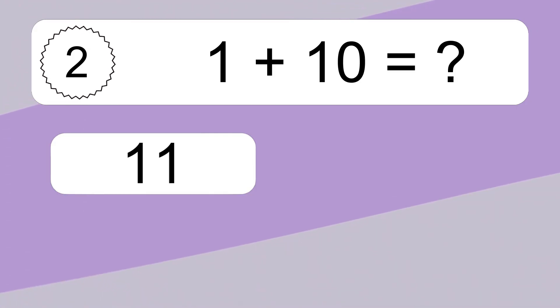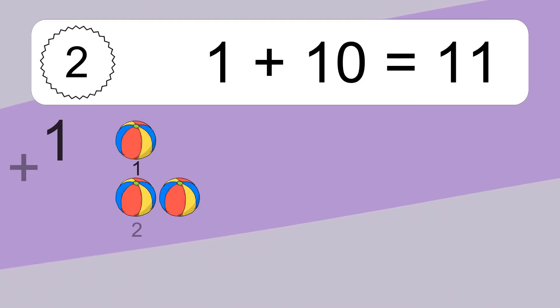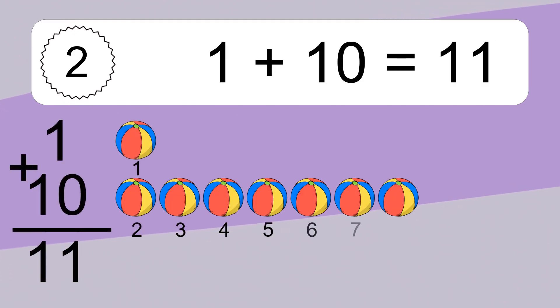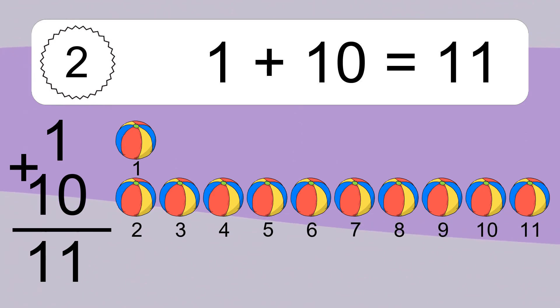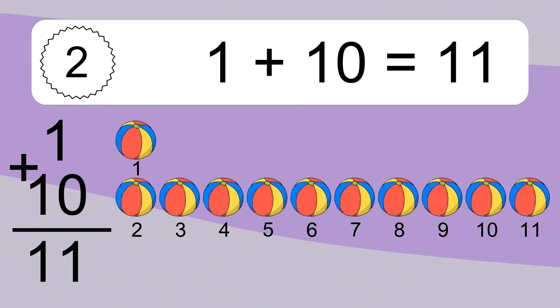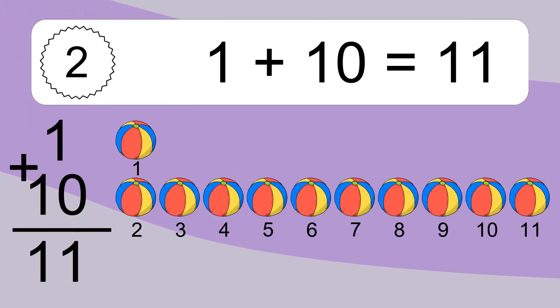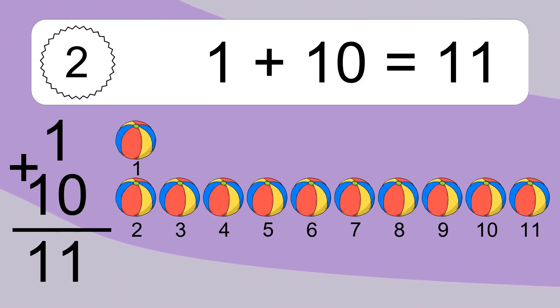1 plus 10 equals what? 1 plus 10 equals 11. Let's count it: 1, 2, 3, 4, 5, 6, 7, 8, 9, 10, 11.